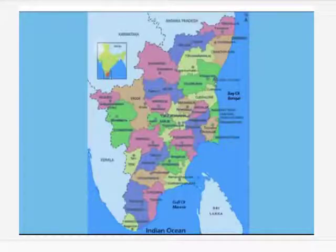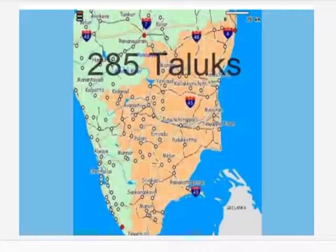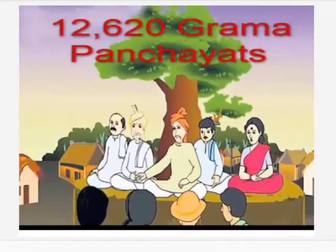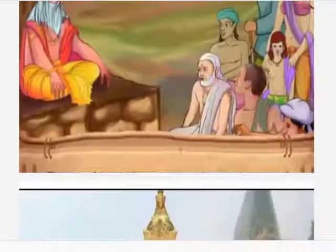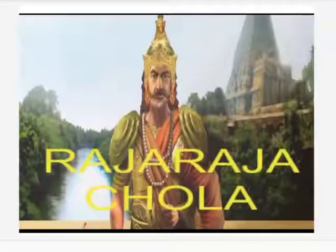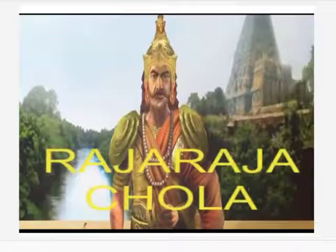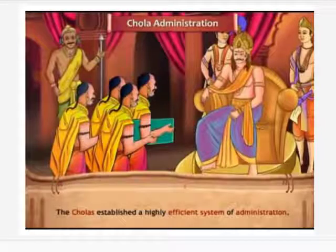Tamil Nadu consists of 33 districts, 285 taluks, and 12,620 village panchayats. During the Chola rule, the Kudavolai system was first introduced by Raja Raja Chola. In that system, village administrative officers of various levels were elected, and they successfully carried out administrative work. This has been clearly stated in the Uttaramerur inscription.